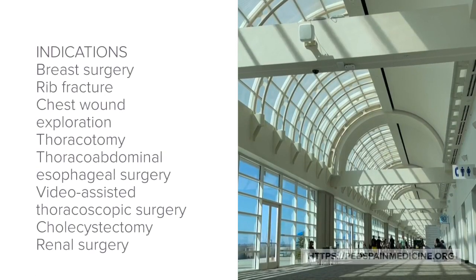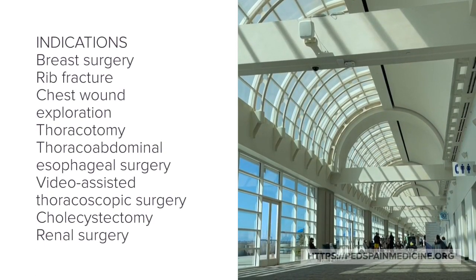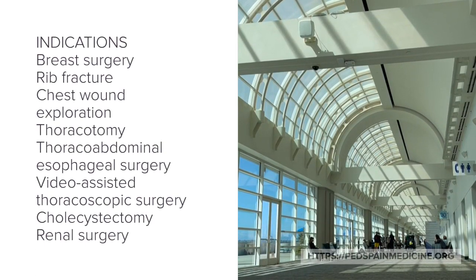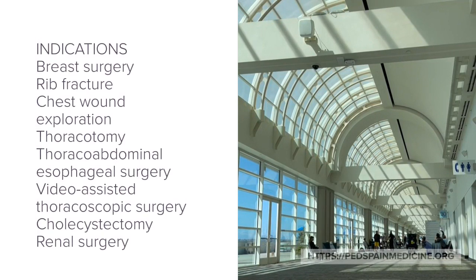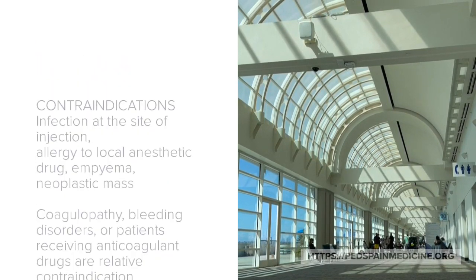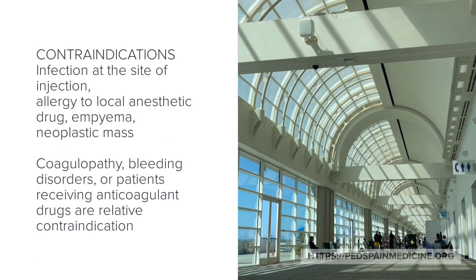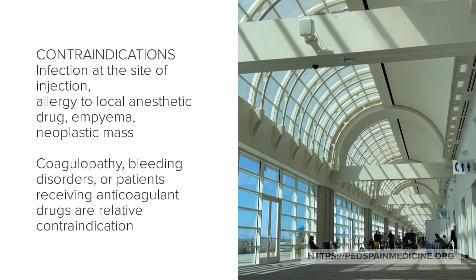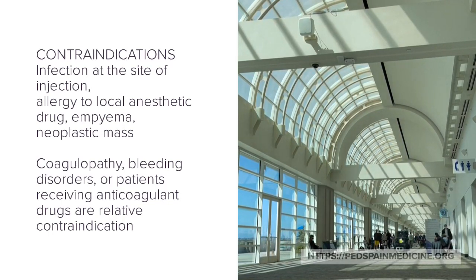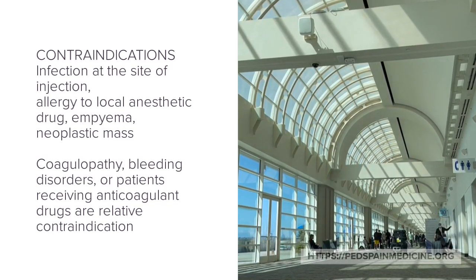Indications for the paravertebral nerve block include surgeries of the thorax and upper abdomen. Bleeding disorders and coagulopathy are relative contraindications to the block.